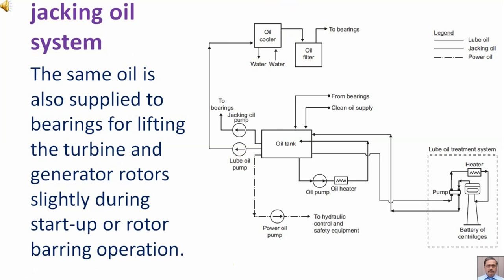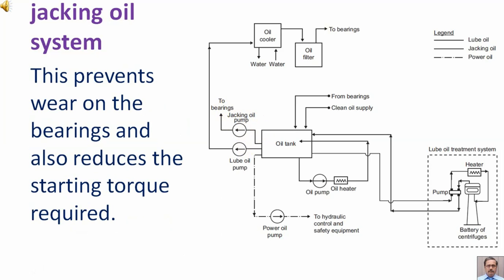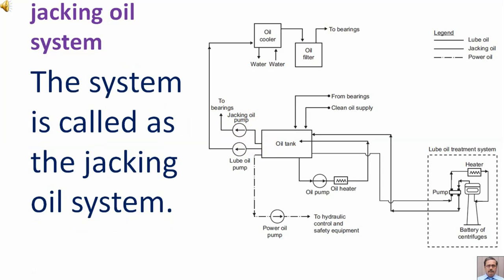The same oil is also supplied to bearings for lifting the turbine and generator rotors slightly during start-up or rotor barring operation. This prevents wear on the bearings and also reduces the starting torque required. This system is called the jacking oil system.